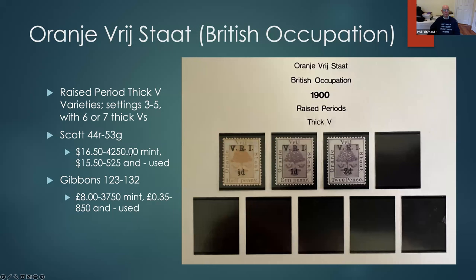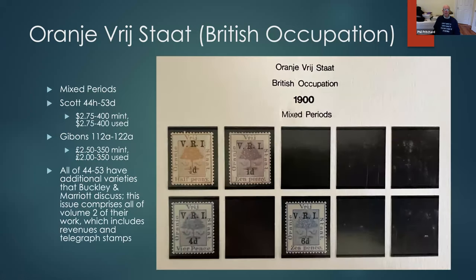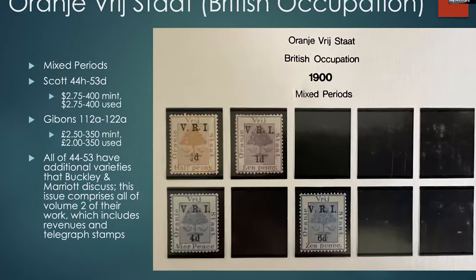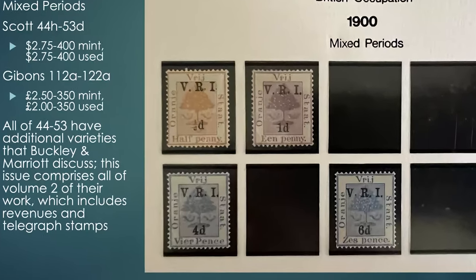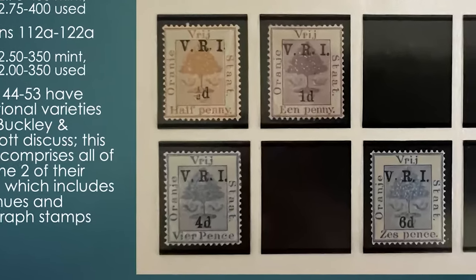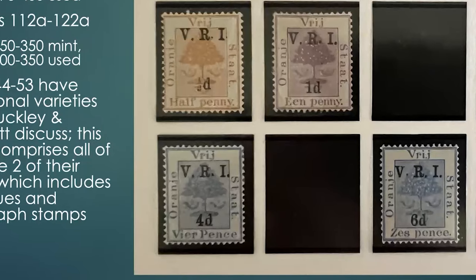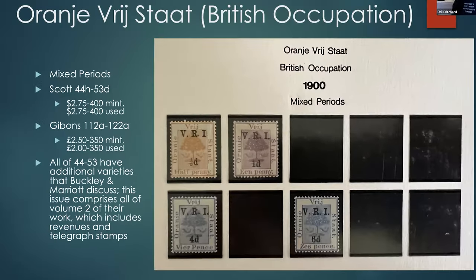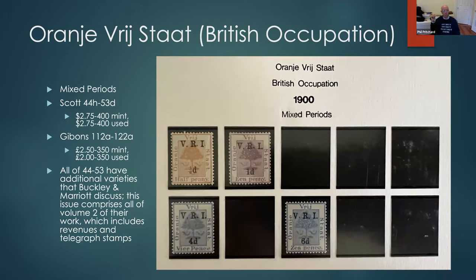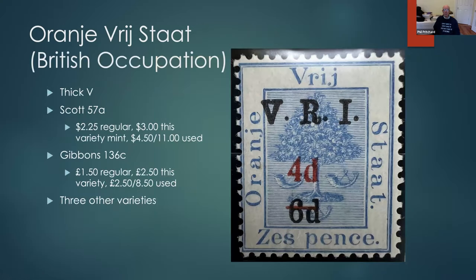Then there's the wonderful variety of mixed periods, in which some of the periods are level with the bottom of the letter and others are raised, creating a whole set of mixed period combinations. As I said, the entire second volume of the Buckley and Marriott book is devoted to these stamps, with all sorts of varieties not listed by any of the catalogs. Slightly later, they overprinted some of these already overprinted stamps.